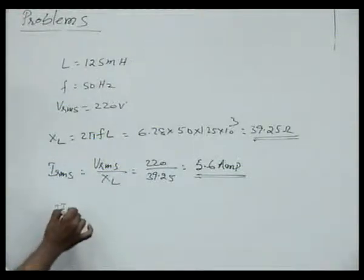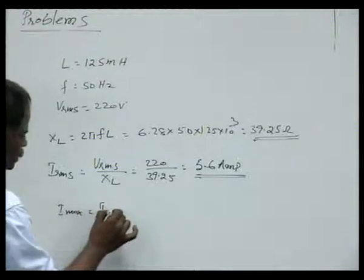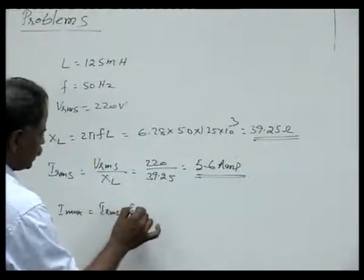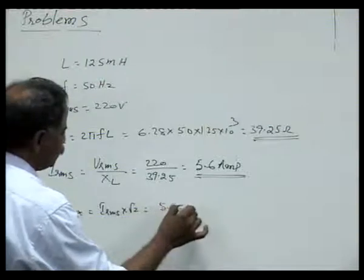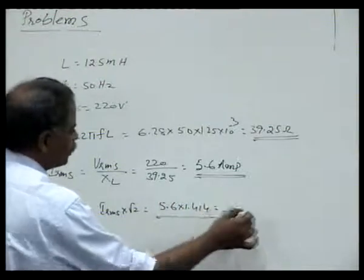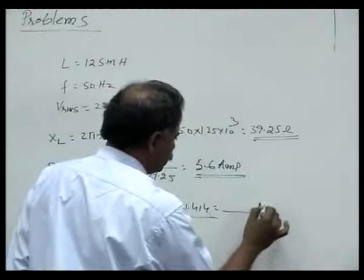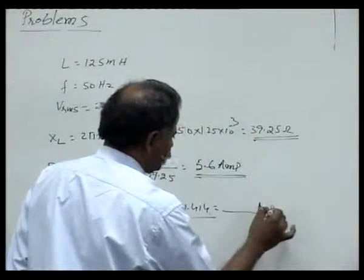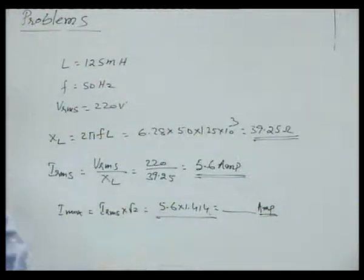Now if you want to calculate the maximum current that it can allow, that is nothing but IRMS into root 2. You can use this: 5.6 into 1.414. Therefore maximum current will be IRMS into root 2, which will give you the maximum value of the current of the circuit.